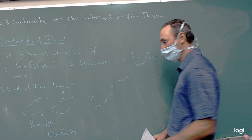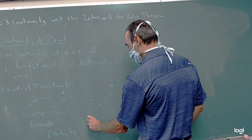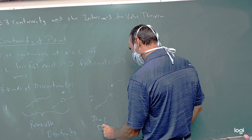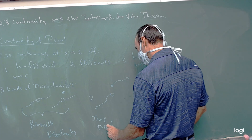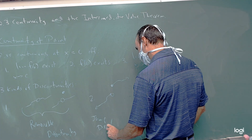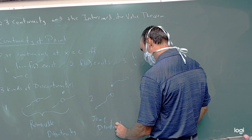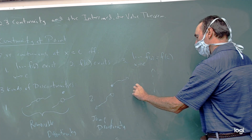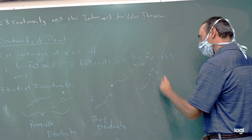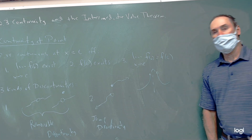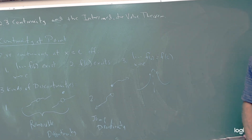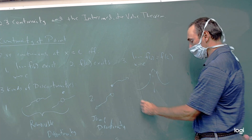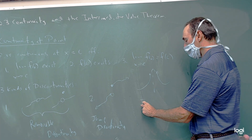What's this called? Jump discontinuity. And then the other one — when you have that vertical asymptote, whatever that may look like — what kind of discontinuity is that? Infinite. It's an infinite discontinuity.